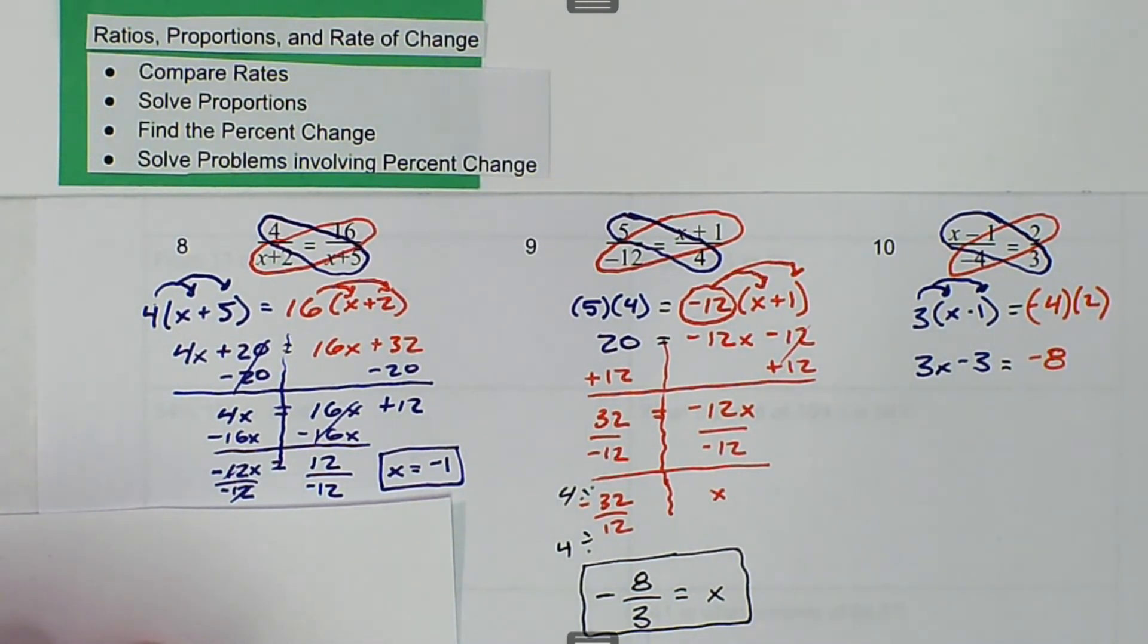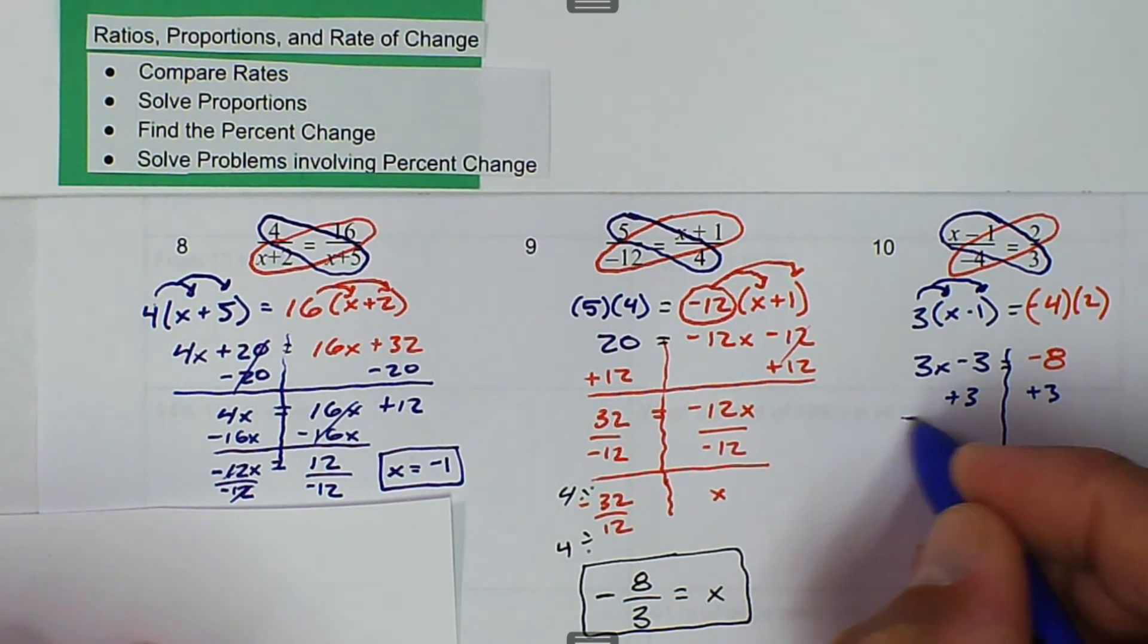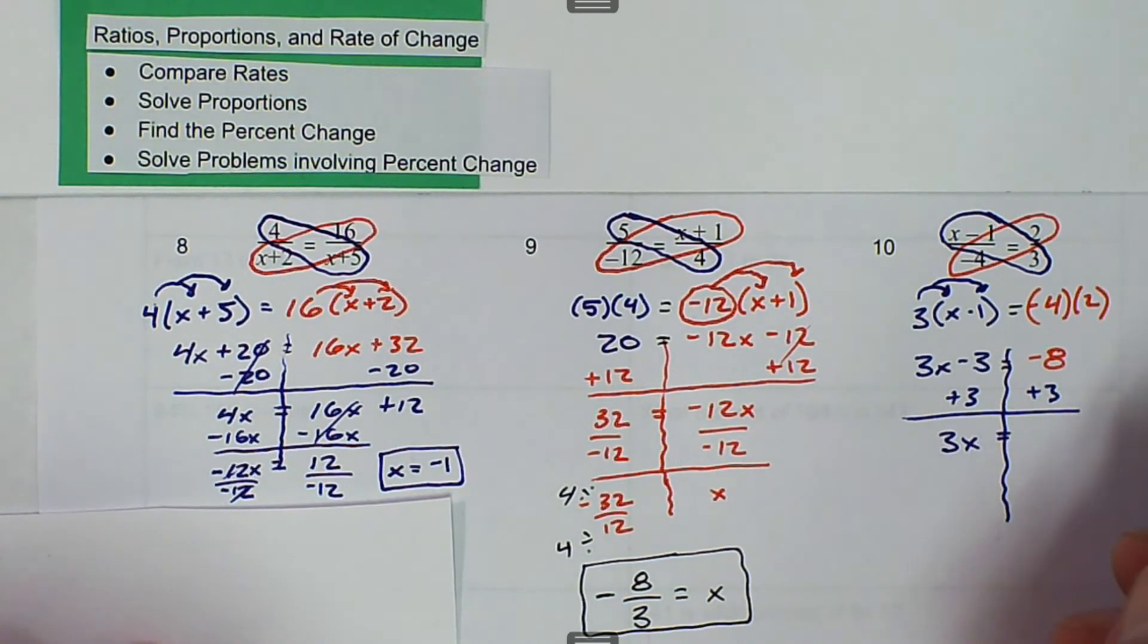Then we want to solve from there using GEMDIS. So we're going to add 3 to both sides. And then we get 3x is equal to negative 5. And then we can divide both sides by 3. And then we get x is equal to negative 5 over 3, and that is in simplest form.